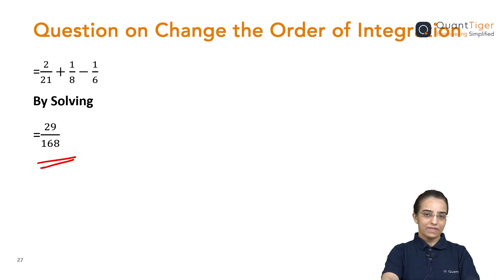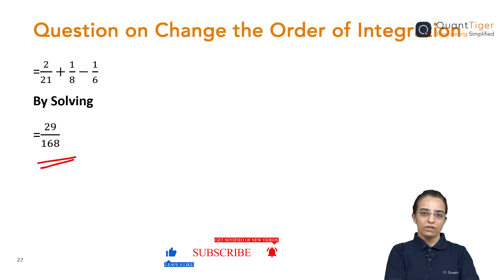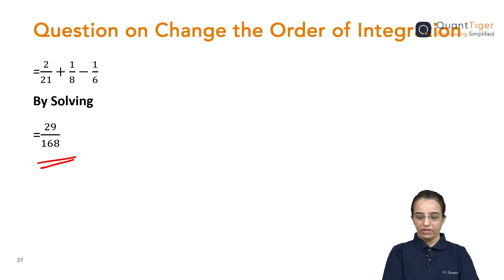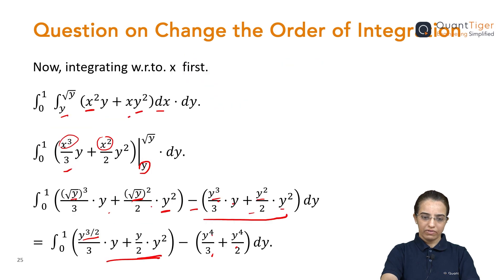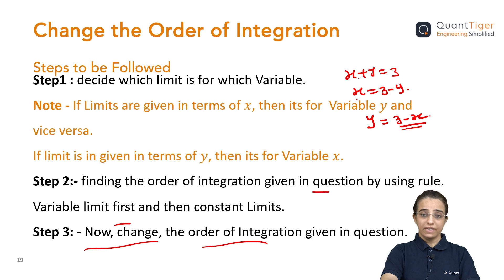I hope it is clear for you. Just a few steps are new in this — like changing the order of integration. For that, you need to understand first what is given in the question, which strip is given, and which limits are given. If you identify that correctly, then you should be able to change it: if vertical is given, make it horizontal; if horizontal is given, make it vertical. Once you change the strip, the important thing is to find the limits of that strip. Once you get that, finally integrate the given expression. If you go through the steps listed at the very beginning, I think that will be quite helpful, and I am sure you will be able to solve any kind of question on this topic.